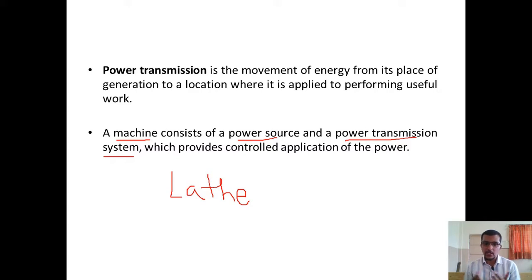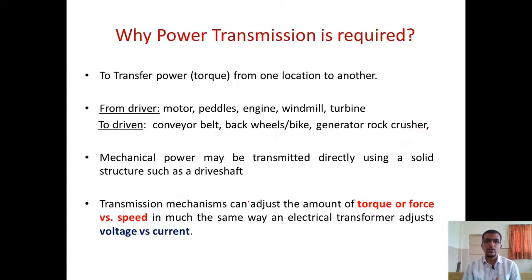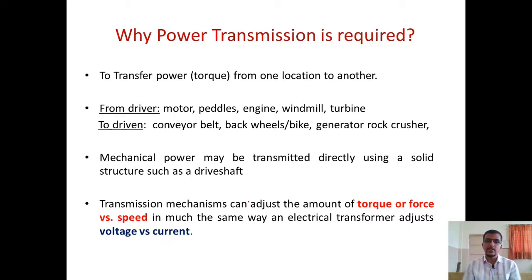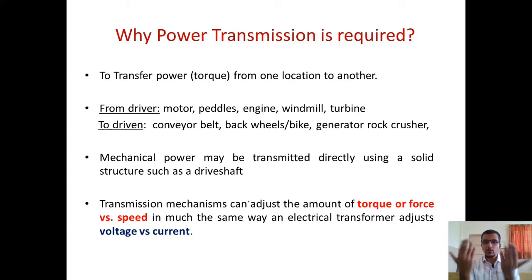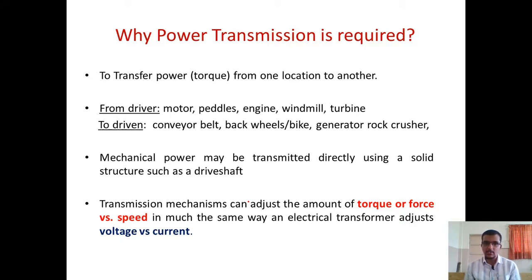Why do we need to transmit power from one place to another? When transmitting power, we also transfer motion, speed, and torque. Most of the time, we transmit power from a driver — a motor, pedal, engine, windmill, or turbine — which tries to rotate a driven member such as a conveyor belt, the back wheel of a car or bike, a generator, or a rock crusher. Mechanical power can also be transmitted directly via a solid structure such as a drive shaft.